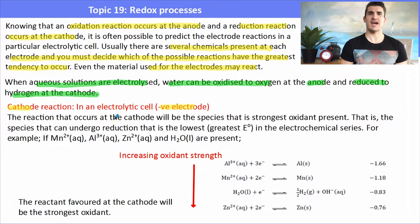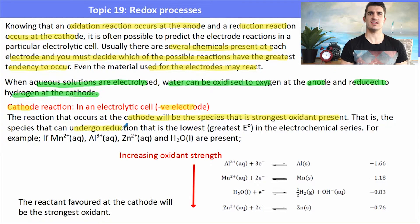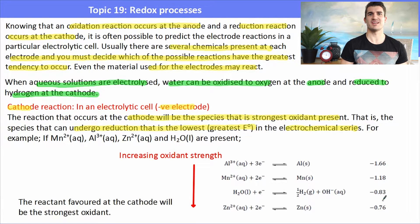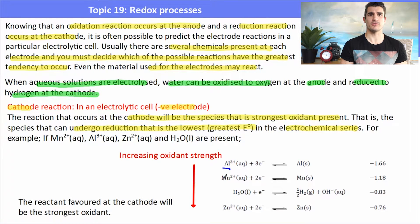The cathode is the negative electrode of an electrolytic cell, and the reaction that occurs at the cathode will involve the species that is the strongest oxidant present — the one that can undergo reduction, which has the greatest E° value in the electrochemical series. For instance, if we have manganese, aluminium, zinc, and water present in solution, we need to work out which one has the greater tendency to occur.